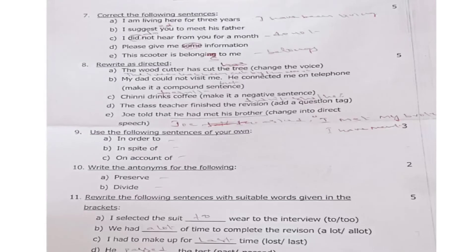Question 7: Correct the following sentences — 7a: 'I am living here for 3 years.' 7b: 'I suggest you to meet his father.' 7c: 'I did not hear from you for a month.' 7d: 'Please give me some information.' 7e: 'This scooter is belonging to me.' You have to identify the mistake in each sentence and correct it.